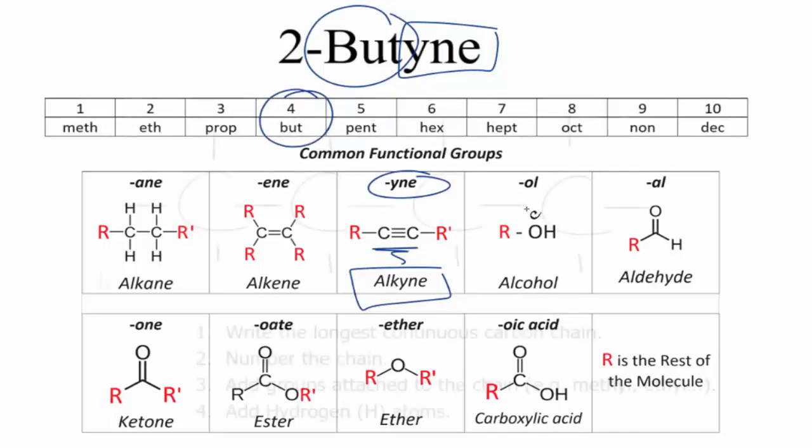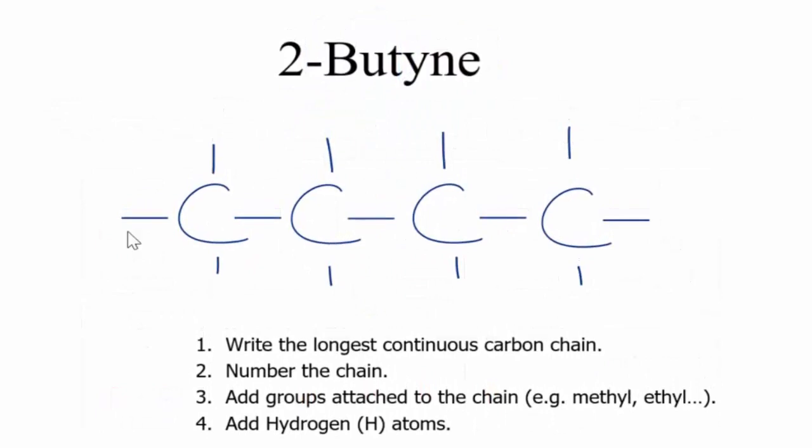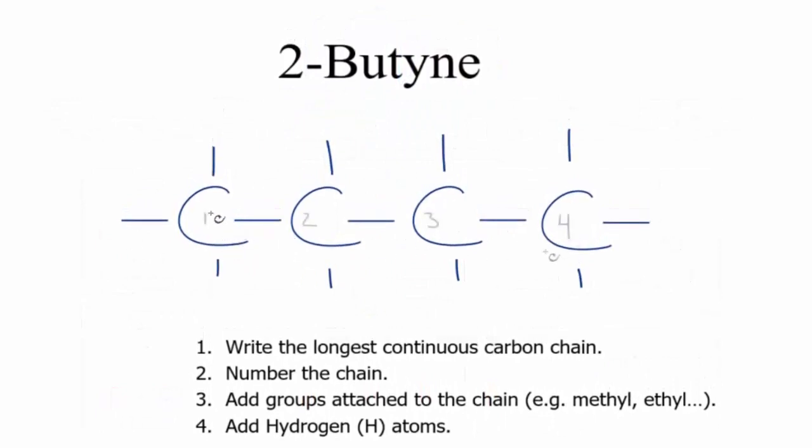So let's put a chain of four carbons up and let's label, let's number each one of the carbons. So the 2 here tells us that that triple bond will be on the second carbon, right after the second carbon. So let's put that in.